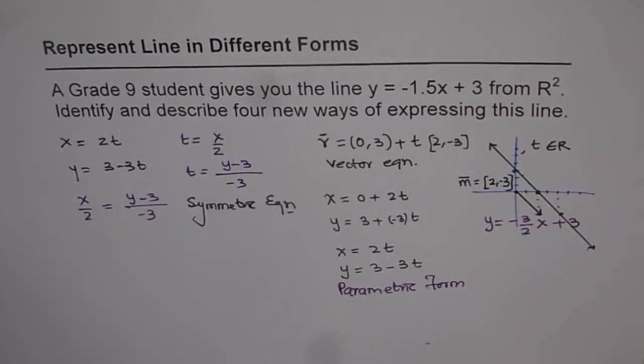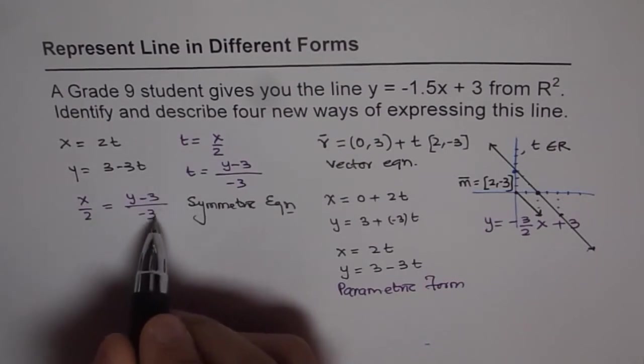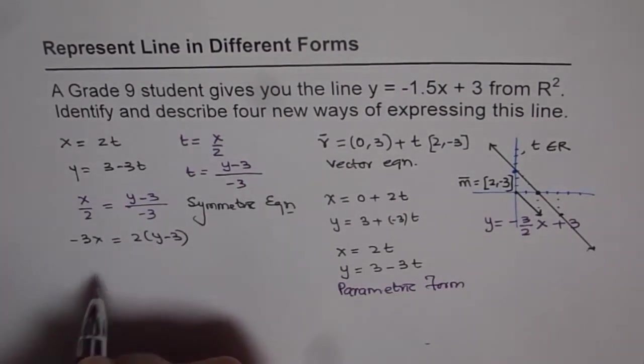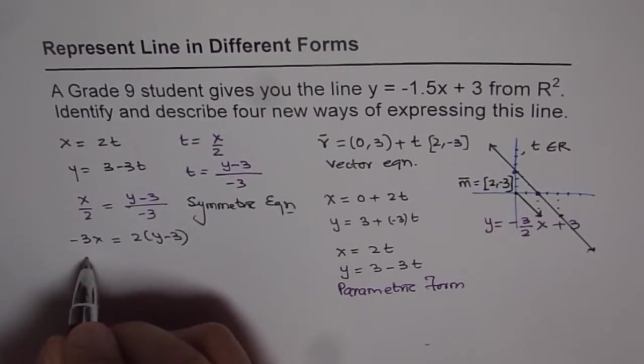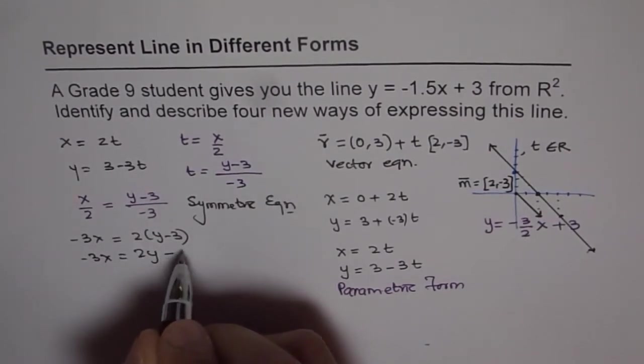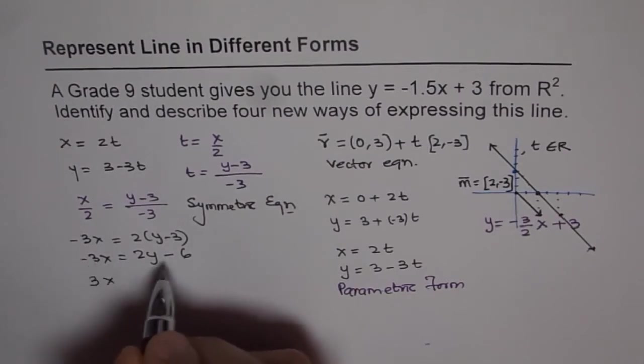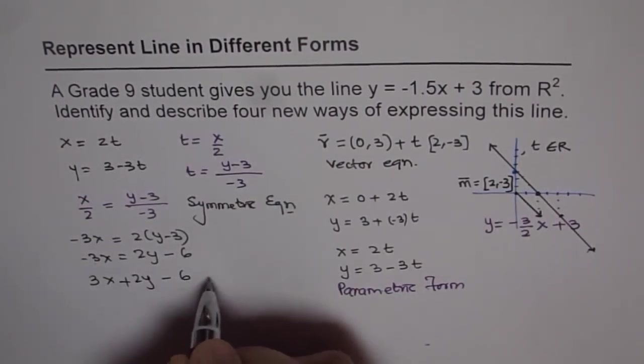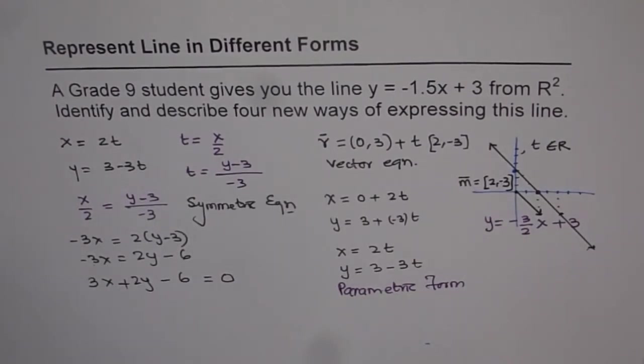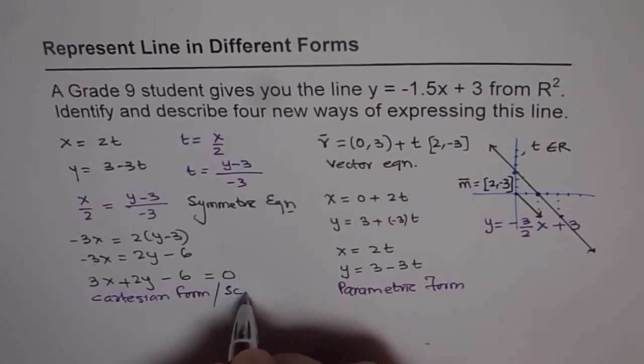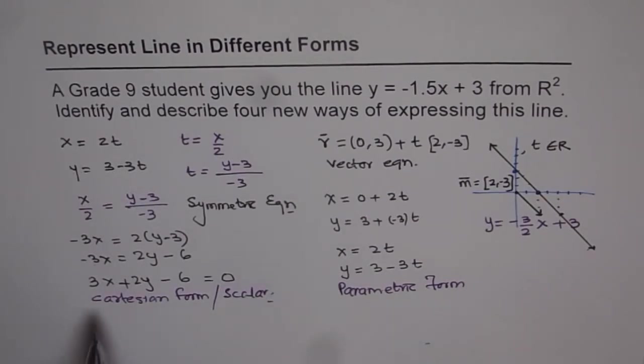Now, we will talk about the fourth form, which we will call scalar or Cartesian form. See how we get it. Just cross-multiply this equation. When you cross-multiply, you get -3x equals 2(y - 3). We can bring all the terms together. We get -3x equals 2y - 6. Let's reorganize and write it in a very standard form. That is 3x + 2y - 6 equals 0. This form of equation is known as Cartesian form, also known as scalar form. The importance of this form is that you can very easily find x and y intercepts, as you did in standard form of equations for lines.